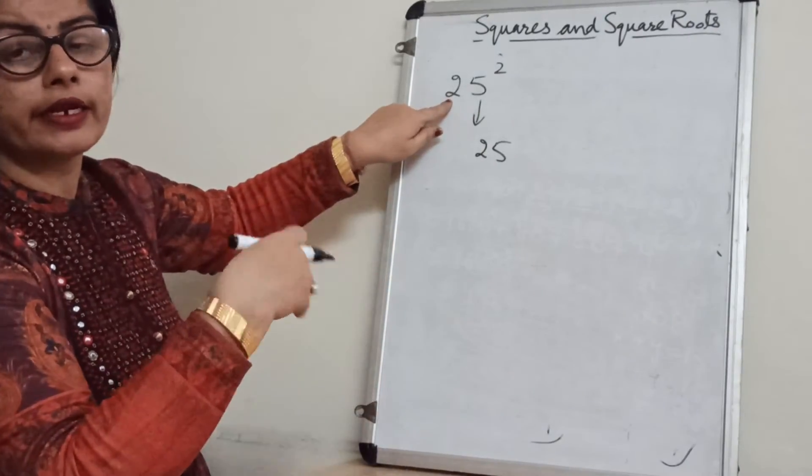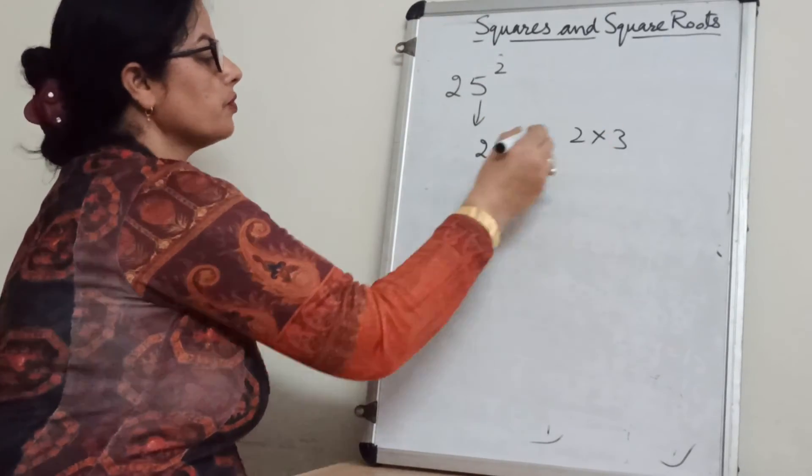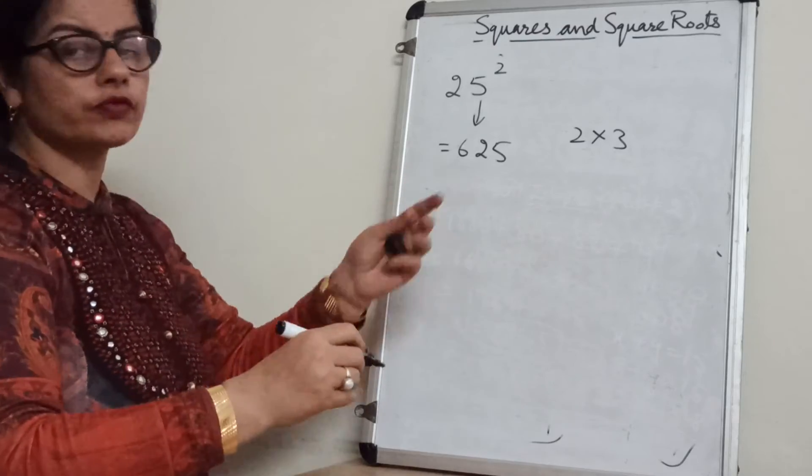And what is here? 2. And what is the next number of 2? 3. So multiply 2 with 3. 2 into 3 is 6. So 625 will be there.